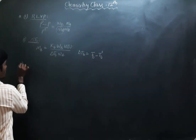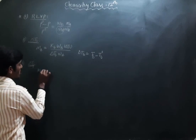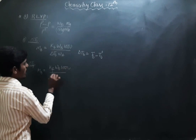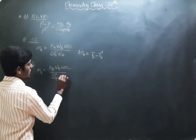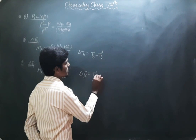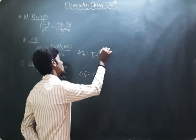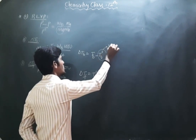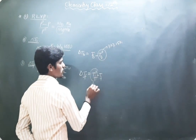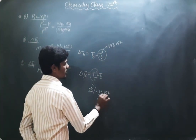The third colligative property is depression in freezing point, ΔTf. The formula is: MB = Kf × WB × 1000 divided by ΔTf × WA. In this case, ΔTf = T₀f minus Tf. Note the difference: for boiling point it is Tb minus T₀b, but for freezing point it is T₀f minus Tf. For water, the boiling point is 373.15 K or 100°C, and the freezing point is 0°C or 273.15 K — these are constants.